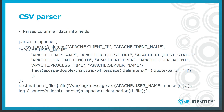The CSV parser can parse columnar data into name-value pairs. A typical example is the Apache access log file, even if the fields are not separated by commas. In this example you can see that each column has a name, and one of the resulting name-value pairs — the name of the authenticated user — is used in a file name.